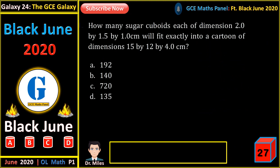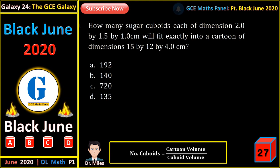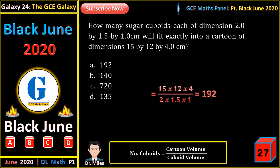How many sugar cuboids, each of dimensions 2 by 1.5 by 1, will fit exactly in the carton of dimensions 15 by 12 by 4 centimeters? The number of cuboids equals the carton volume divided by the cuboid volume. That gives us 192.